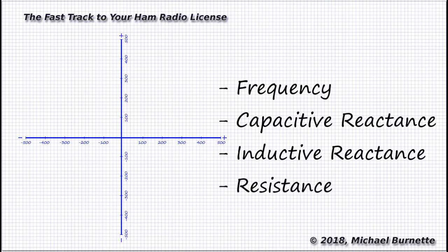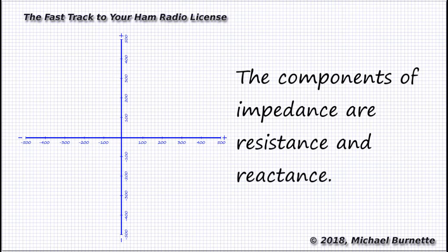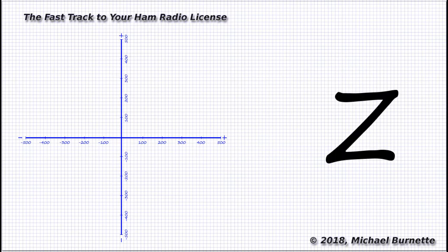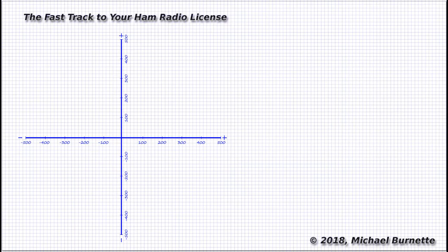When we mathematically combine the resistance and reactance in a circuit, we get the impedance, represented in formulas by the letter Z. Obviously, this is a more complex calculation than E equals I times R. We can't just add up the ohms. It takes a couple of steps to complete.